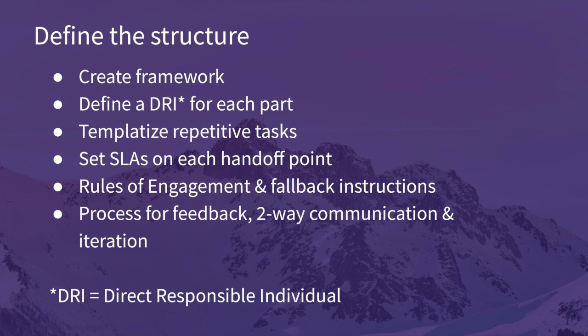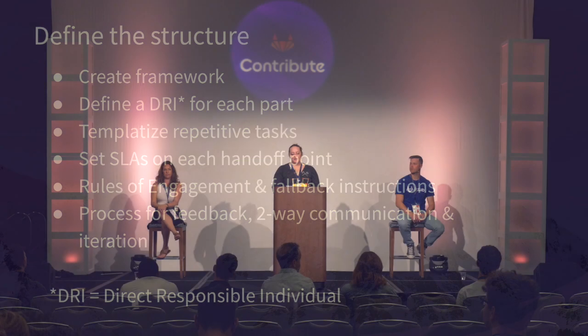Create rules of engagement and have a feedback loop. As our game showed, the people who could ask questions and ask for clarification got closer to the structure than those who could only go one way. Make sure you have that feedback loop. You can iterate the process as you go — if something's not working, change it.